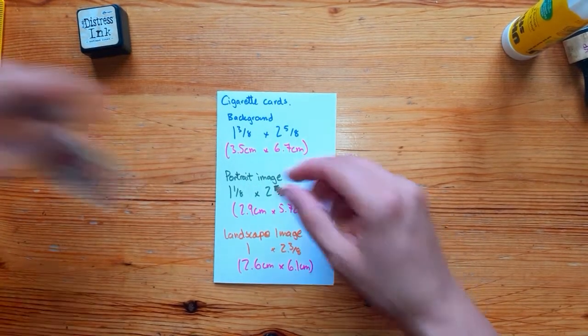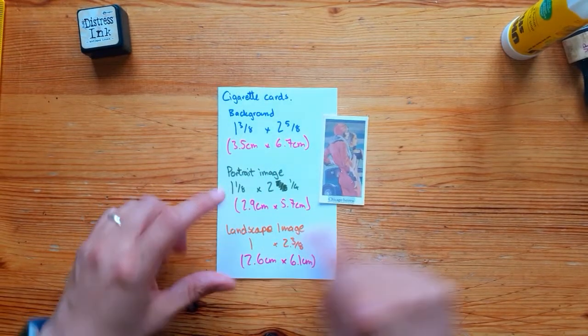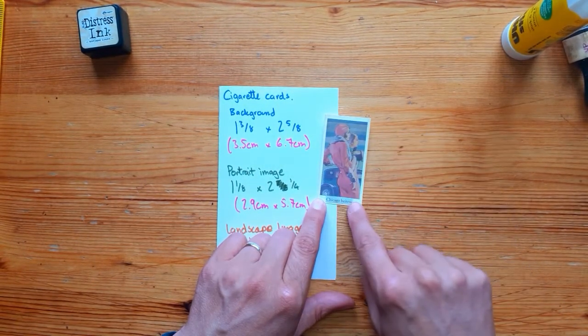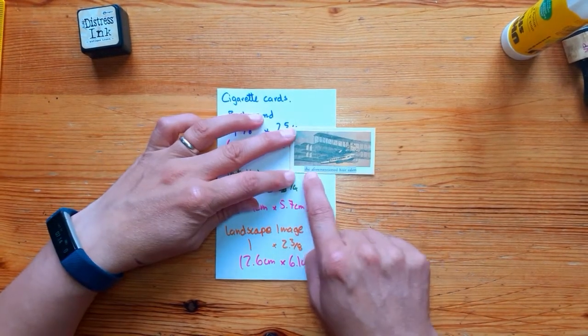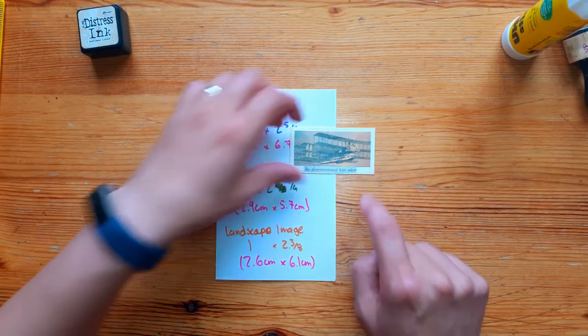I've done one for portrait image and the reason why there's a difference for portrait and landscape is I've made it slightly different so that you've got a bit more space to put in a bit of text at the bottom. And with the landscape, again, I've made it so you've got a bit more space to put in text along the bottom of that.